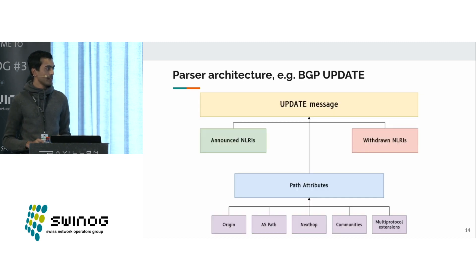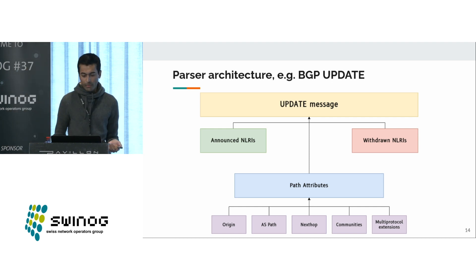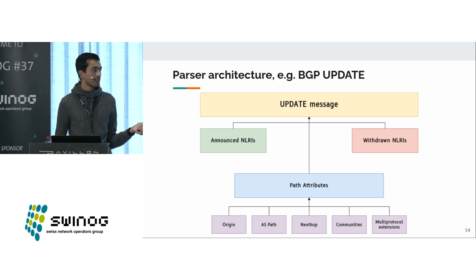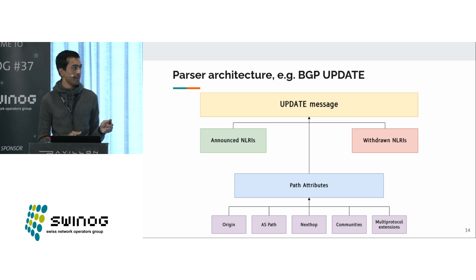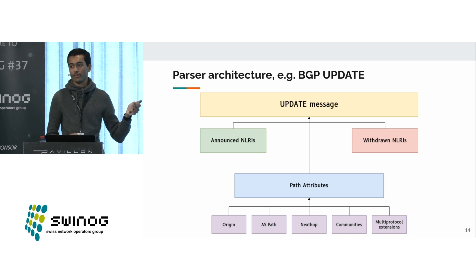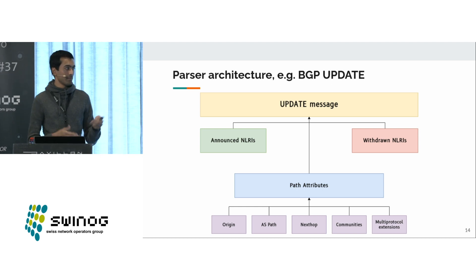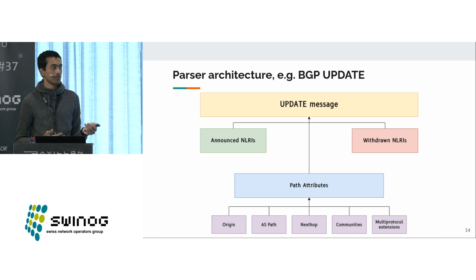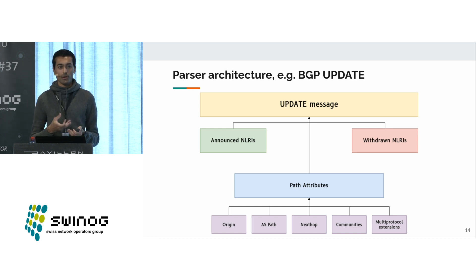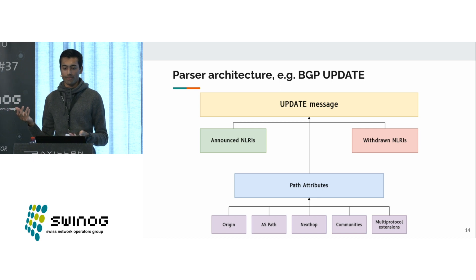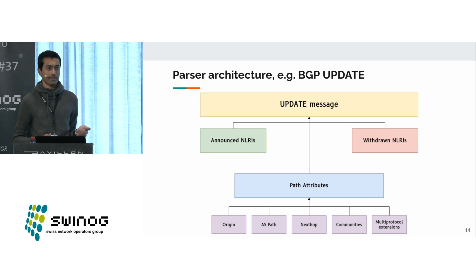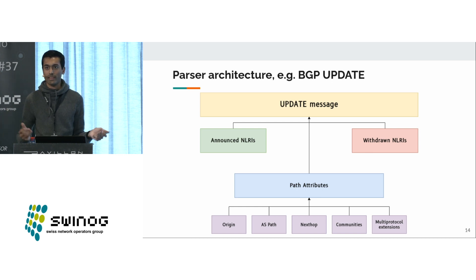The way I architected the parser follows how BGP messages are structured. In an update message, you have NLRIs of what's announced and what's withdrawn, and you have your path attributes. Each of the purple boxes at the bottom have their own parser, and they get dispatched to based on what path attributes are contained in the message. This makes it really modular and easy to add additional path attributes — you just need to add one function to parse whatever new path attribute you want, it gets automatically integrated into the parser, and the application logic can also add processing for that path attribute.